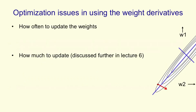So optimization issues are about how you use the weight derivatives. The first question is, how often should you update the weights? We could try updating the weights after each training case. So you compute the error derivatives on a training case using backpropagation, and then you make a small change to the weights. Obviously this is going to zigzag around because on each training case you'll get different error derivatives.